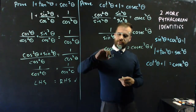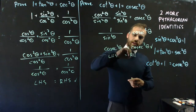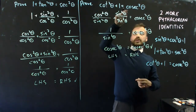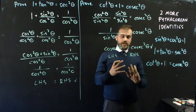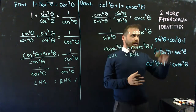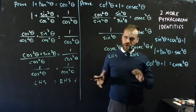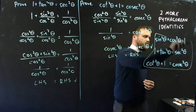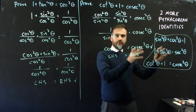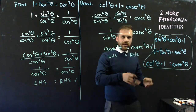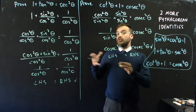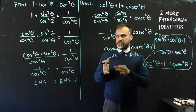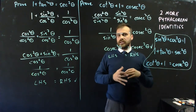Tick — the left-hand side equals the right-hand side. Therefore, the identity cot squared theta plus 1 equals cosec squared theta is true. Both of these are derived from the Pythagorean identity. You are expected to have these stored away, either on your formula sheet or in your head, and you can deploy them when proving other trigonometric identities, of which there are literally hundreds.